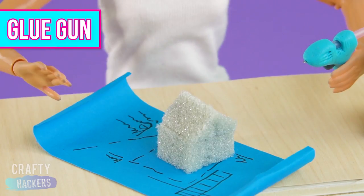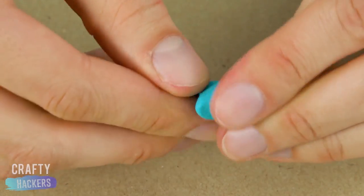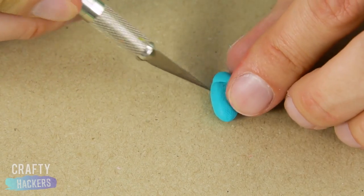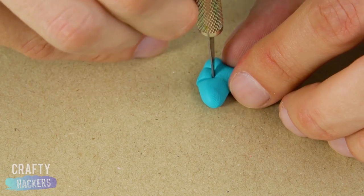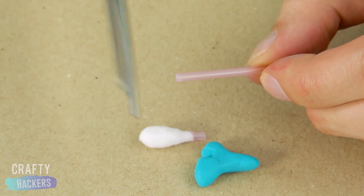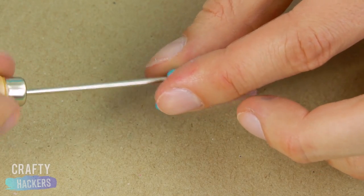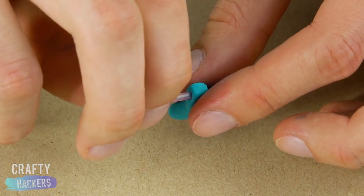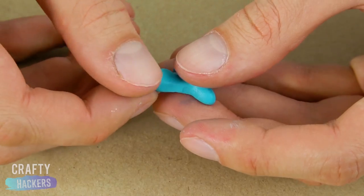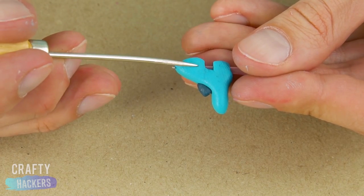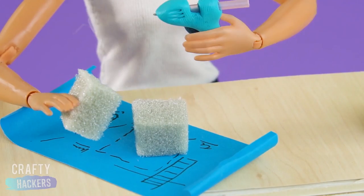Glue gun! Barbie likes to get crafty, just like us. So, let's make her a glue gun. Form the gun with a piece of blue polymer clay, and cut out a small section for the glue stick. The base of the q-tip works perfectly as a glue stick. Carefully poke a hole through the back of the glue gun, and insert the stick. Next, add a pin to the front, using tweezers to push it into the clay. Add a small piece of darker blue clay as the trigger, and push in a few details, like this. Now Barbie can craft it up.